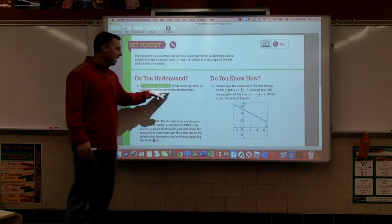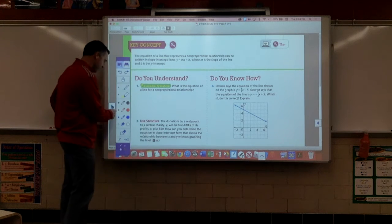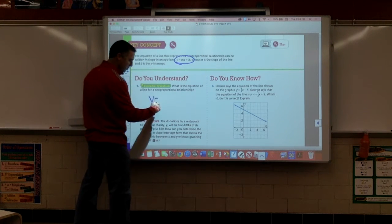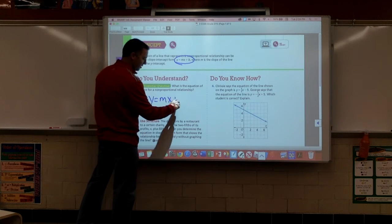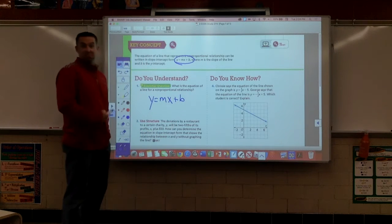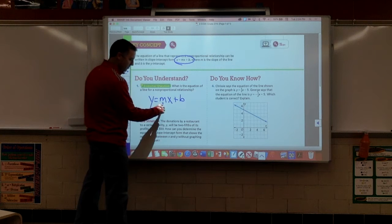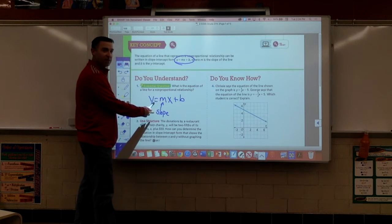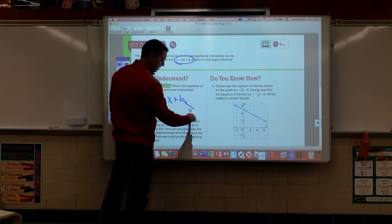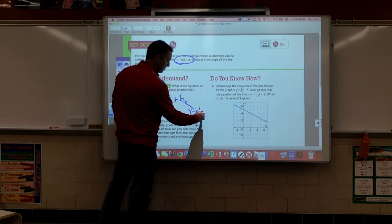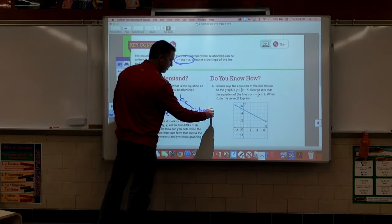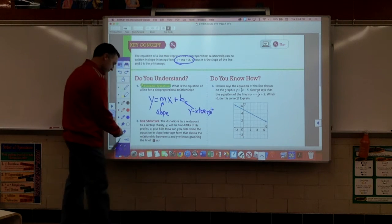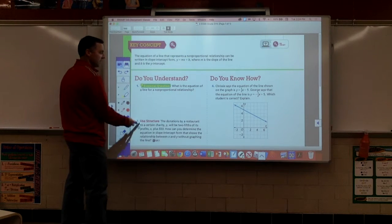Now, what is the equation of a line for a non-proportional relationship? Folks, we just read it. Y equals mx plus b. There it is. That's the equation. M, this is your slope. You know how to find slope. This here is your y-intercept. Okay, there's your equation. Good work. That was easy. I like this stuff.